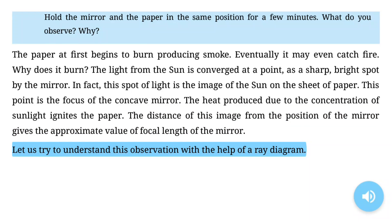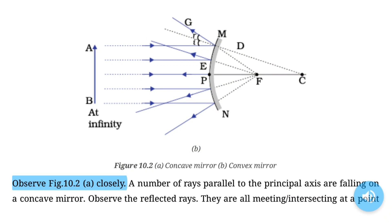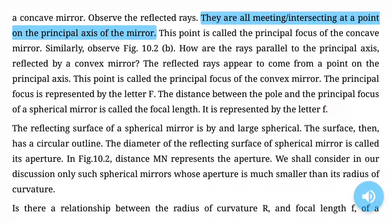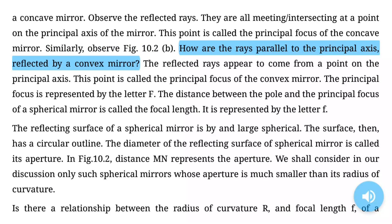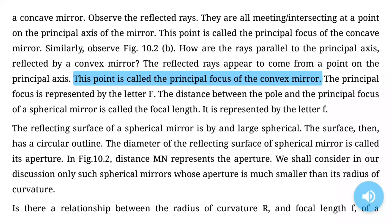A number of rays parallel to the principal axis are falling on a concave mirror. The reflected rays are all meeting at a point on the principal axis of the mirror. This point is called the principal focus of the concave mirror. Similarly, the rays parallel to the principal axis reflected by a convex mirror appear to come from a point on the principal axis. This point is called the principal focus of the convex mirror.